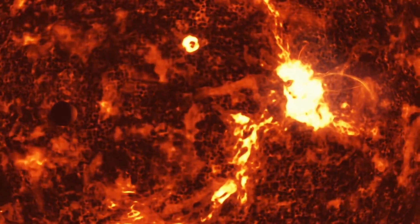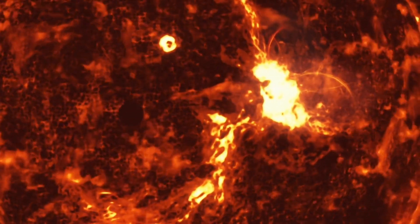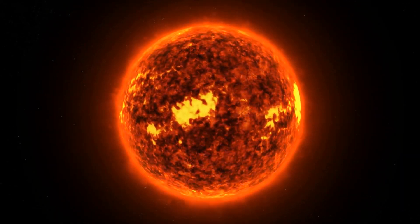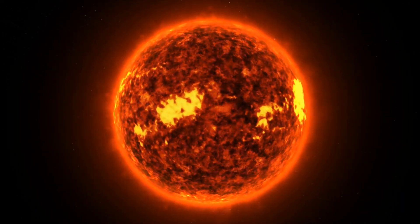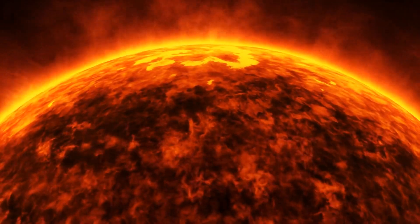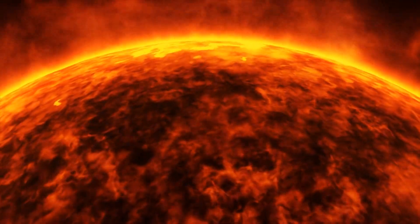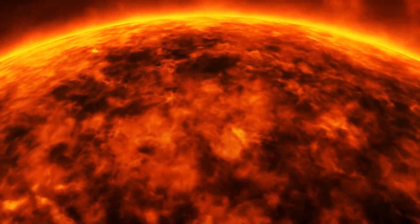Sunspots are dark regions on the sun's surface that are associated with strong magnetic fields. As the number of sunspots increases, so does the strength of the sun's magnetic field. At the peak of the solar cycle, the magnetic field is most active, and the sun experiences a higher number of flares and CMEs.